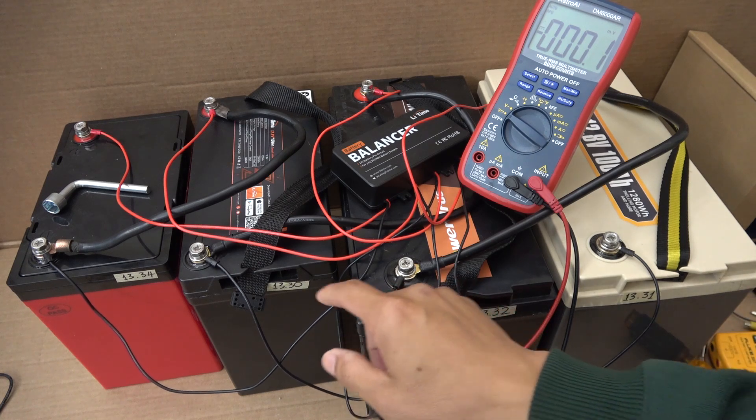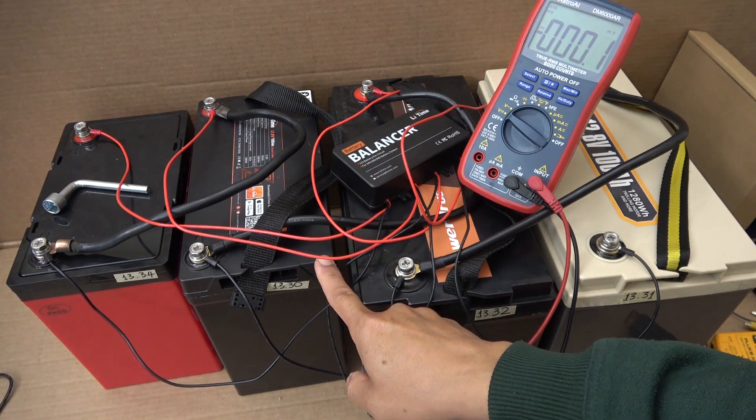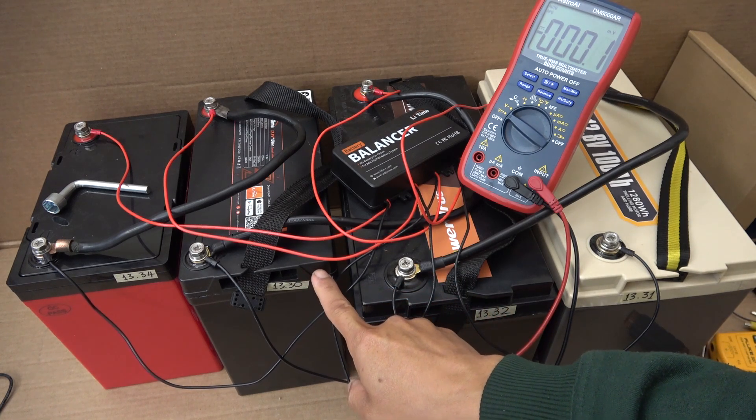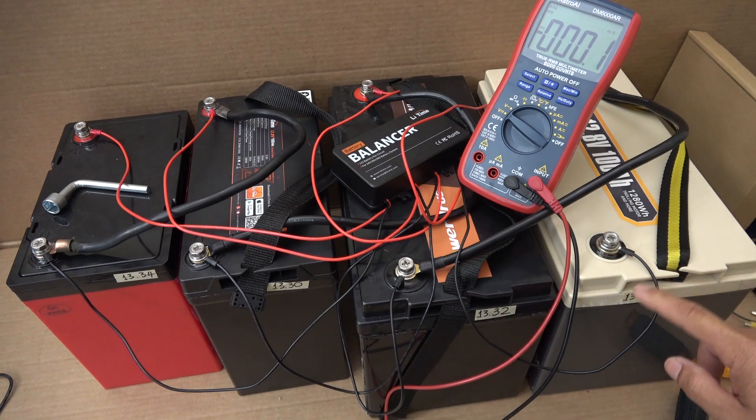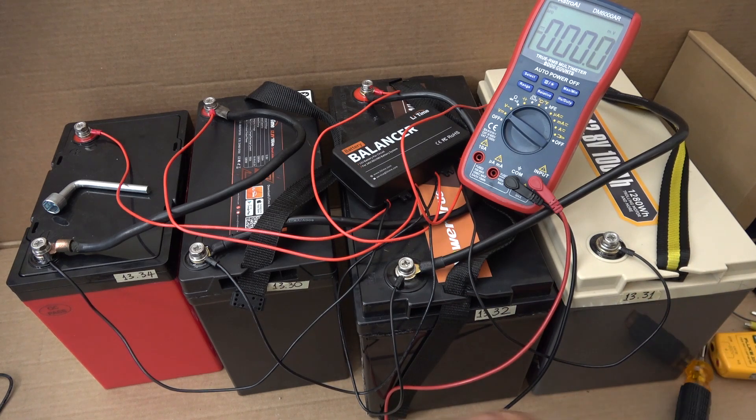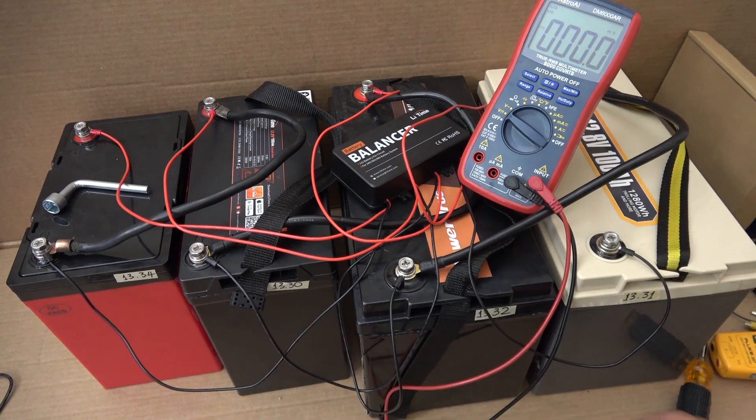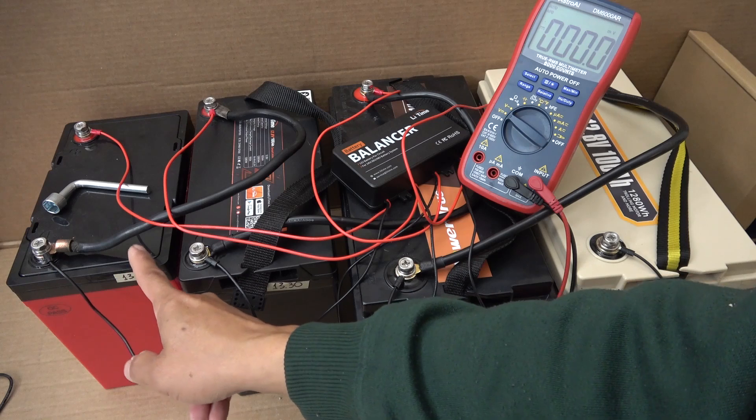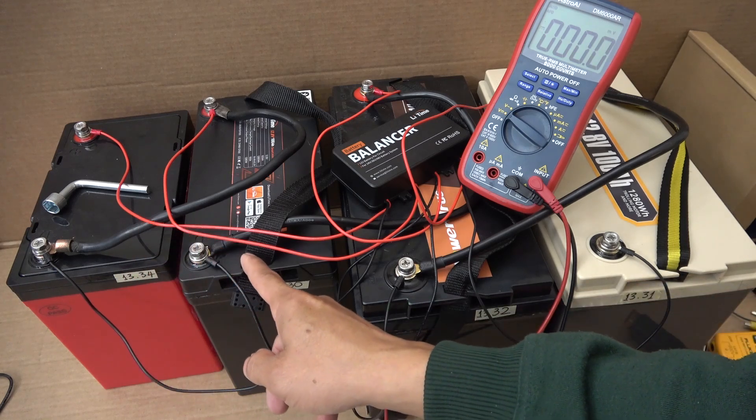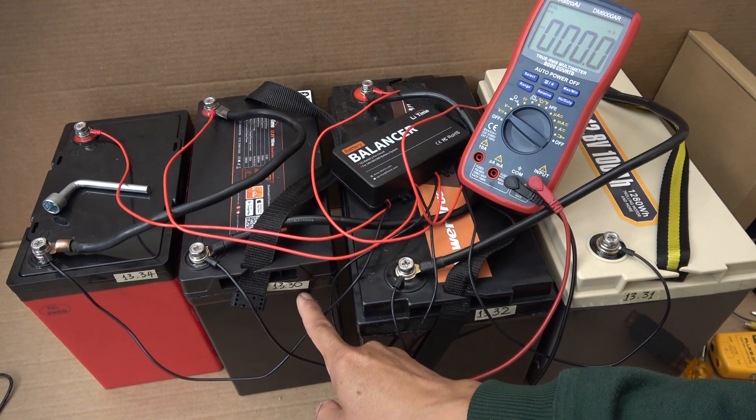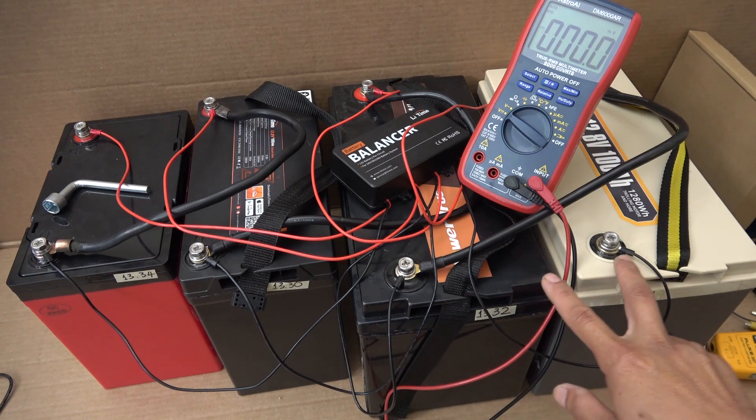So you can see the voltage of this one increased to 13.32. This one increased to 13.32. This one decreased to 13.33. So the balancer actually takes the power from the higher voltage battery and charges the battery that has a lower voltage. Same thing is happening here.